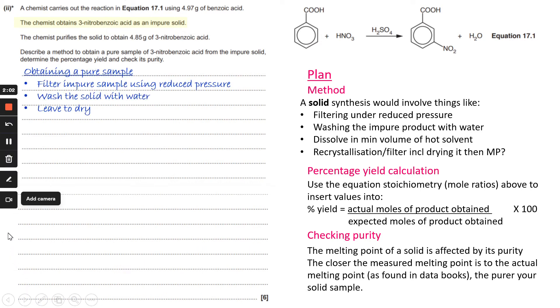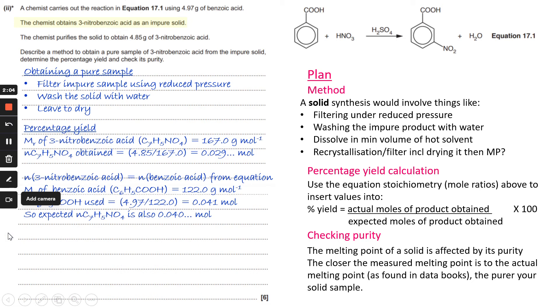So let's see how we might put our answer together. Obtaining a pure sample, you'd filter the impure sample using reduced pressure, you wash the solid with water, and then leave it to dry.